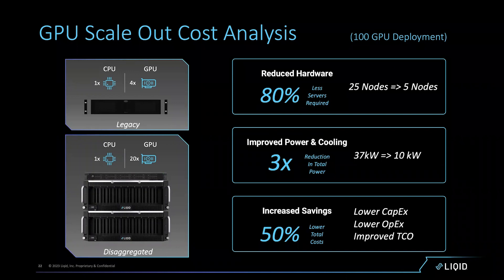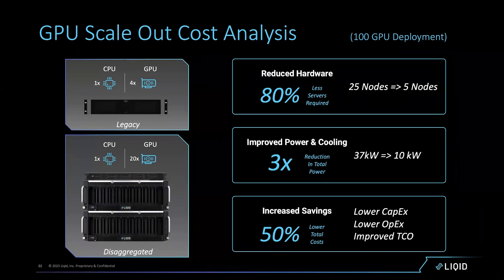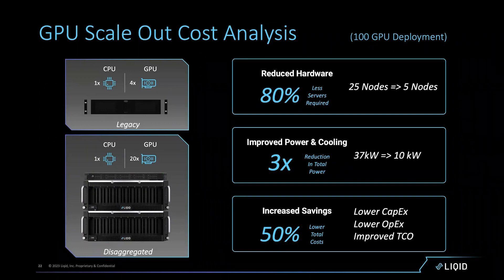We showed them the art of the possible: you have a GPU problem, not a compute problem. By changing the ratio from four GPUs per server to 20 GPUs per server using our fabric technology, they reduced the number of servers needed from 25 to five. The secondary benefit was platform power cut by 70% or more. The total TCO for disaggregation was not a tax at all — the customer actually saved a tremendous amount of money by going to a disaggregated architecture.